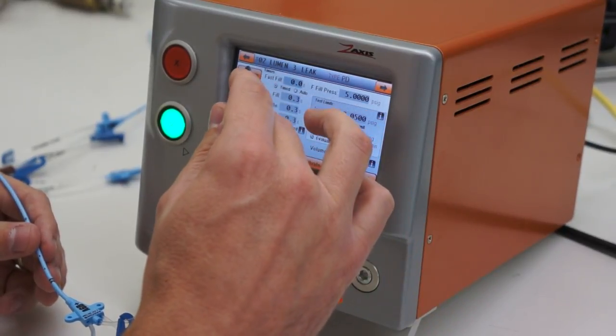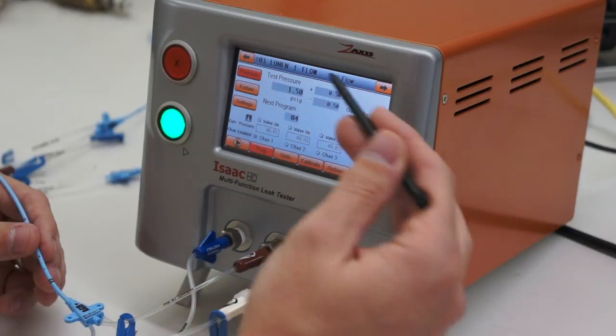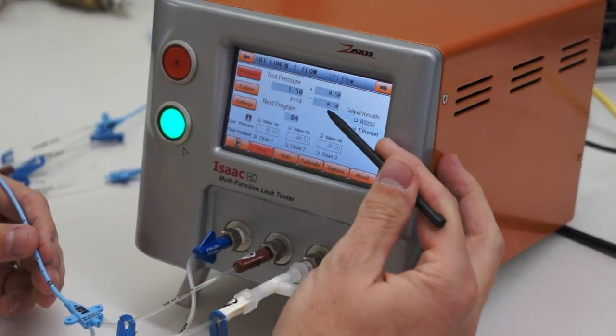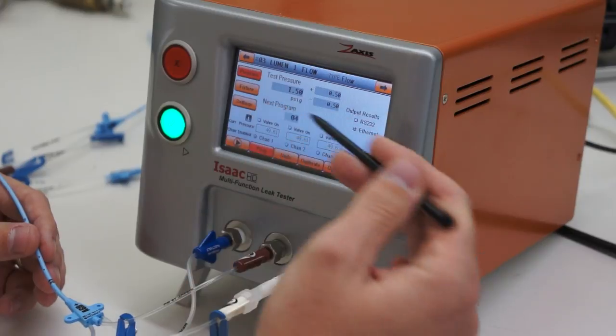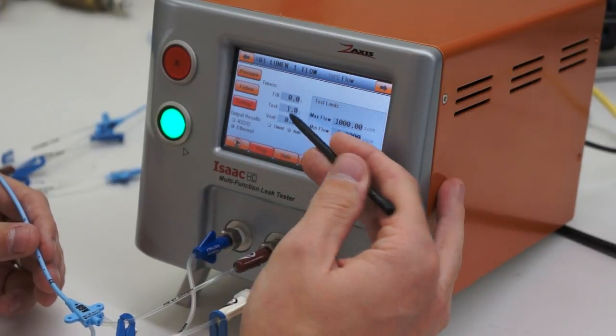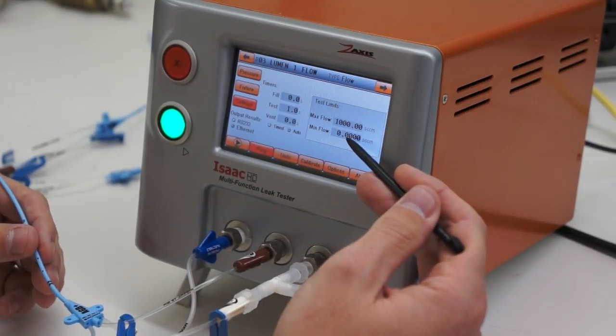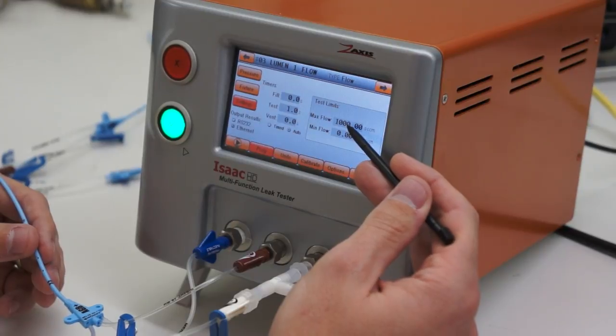The other test we do is a flow test done at 1.5 psi, plus and minus 0.5. We're testing for one second. We've set a minimum flow of 0 and a maximum flow of 1,000.